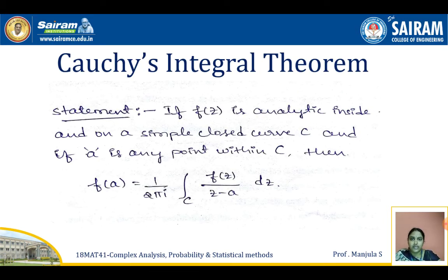Cauchy's integral theorem. First we should know the statement of Cauchy's integral theorem. If f of z is analytic inside and on a simple closed curve C, and a is any point within the given region C, then we can write Cauchy's integral formula as: f of a equals 1 by 2 pi i, integration over C of f of z divided by z minus a, with respect to z.